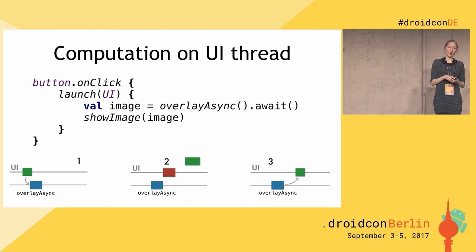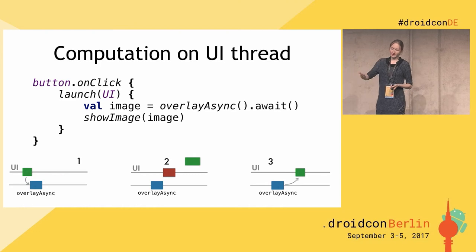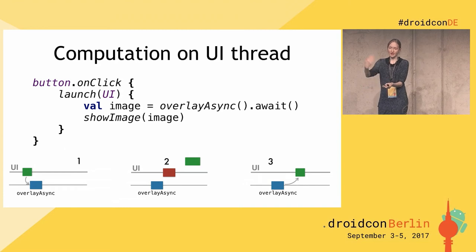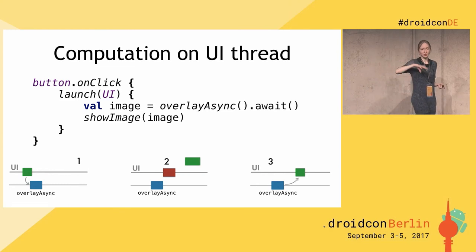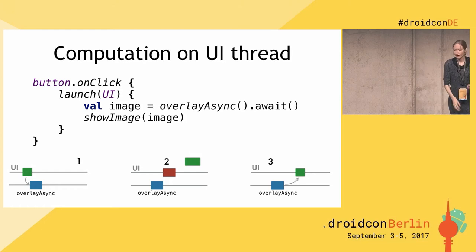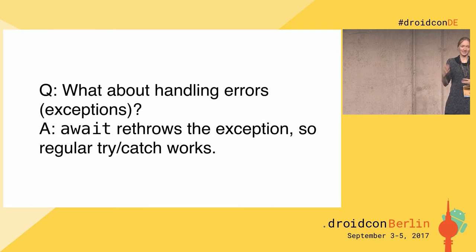There's an example of starting a computation on the UI thread. We can say `launch` something in the UI thread, starting another computation in the context of the UI thread. Then when we call `await`, our computation is put away — it's no longer on the UI thread. After we have the result, it's put back. So now it should be clear how it all works and what async/await and coroutines do.